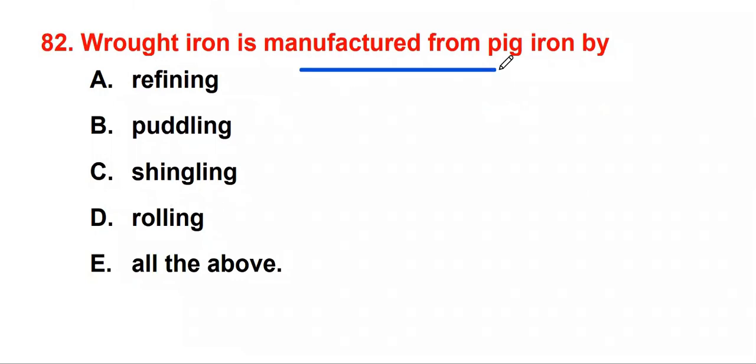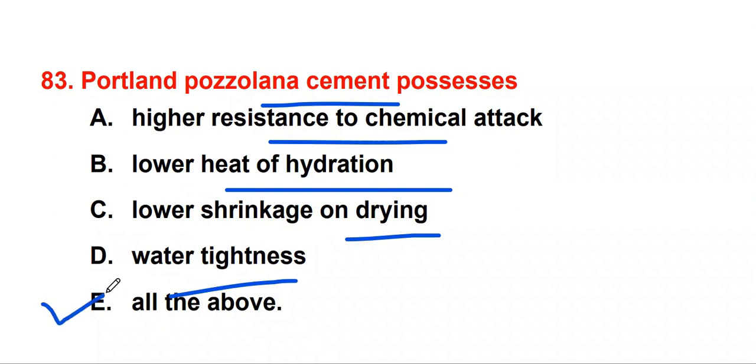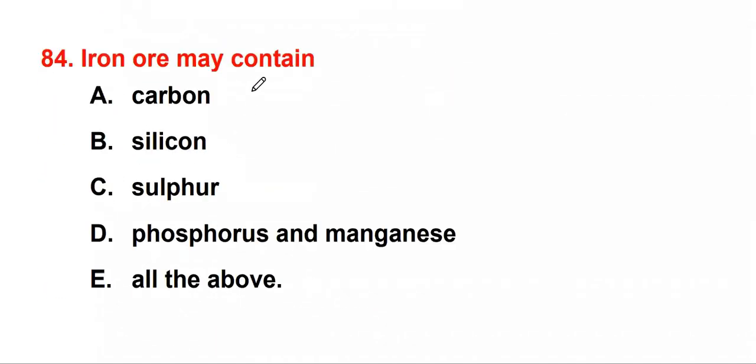The hardest rock is diamond. Wrought iron is manufactured from pig iron by all the above: refining, puddling, shingling, and rolling. Portland pozzolana cement possesses high resistance to chemical attack, lower heat of hydration, lower shrinkage on drying, and water tightness. So all the above. Iron ore may contain carbon, silicon, sulphur, phosphorus, and manganese. So answer is all the above.